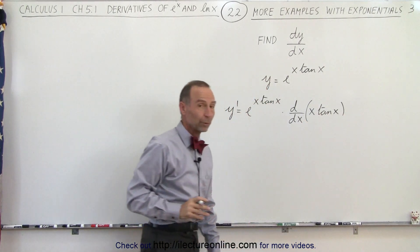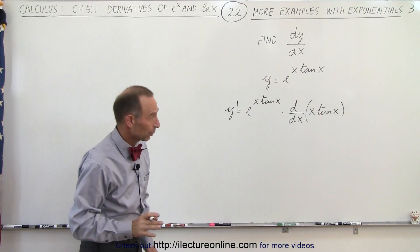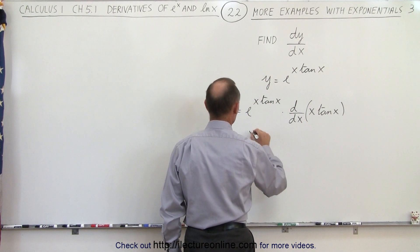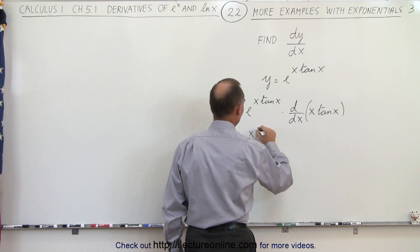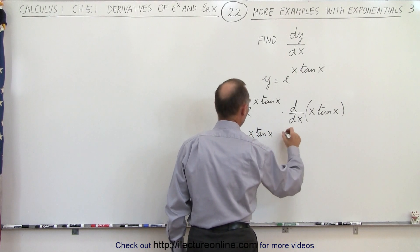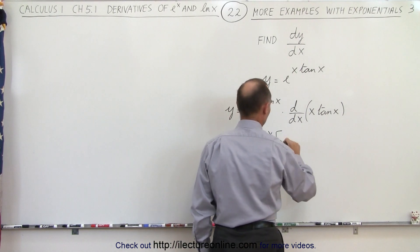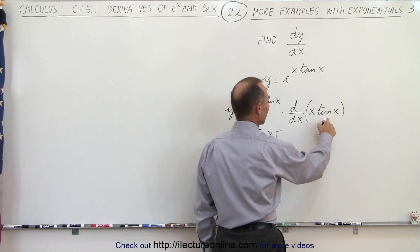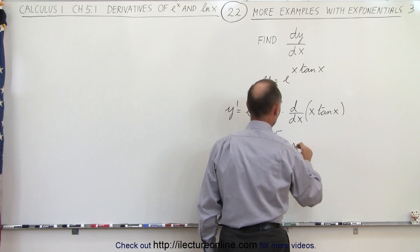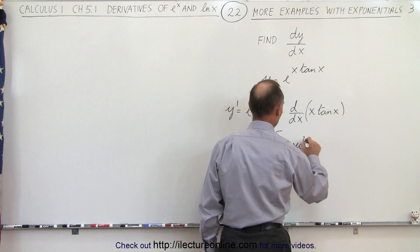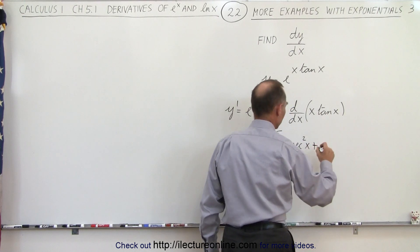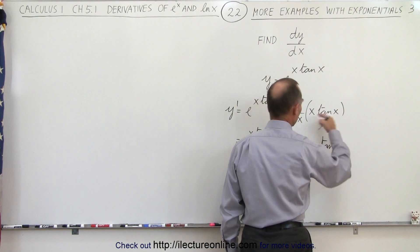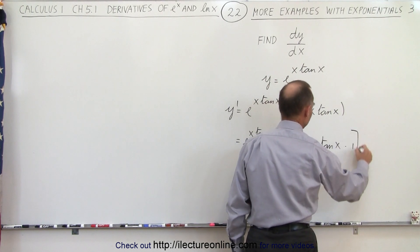And that looks like a product, so we're going to use the product rule. This becomes e raised to the x times the tangent of x, times the first, times the derivative of the second — the derivative of the tangent is the secant squared of x — plus the second, which is the tangent of x, times the derivative of the first, which is 1.